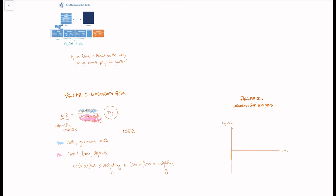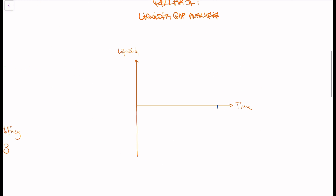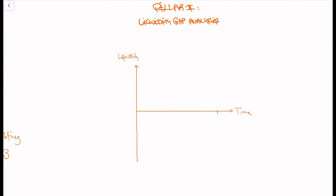Now let's go to the Pillar 2 liquidity risk management approach. Pillar 2 works with the liquidity gap analysis, and it's quite simple. You basically have a time profile of all payments that the bank has to make, and you look at whether inflows and outflows match each other. For example, say a bank has a depositor who opens an account and deposits 100 euros. The bank also gives a credit of 50 euros today to some company.